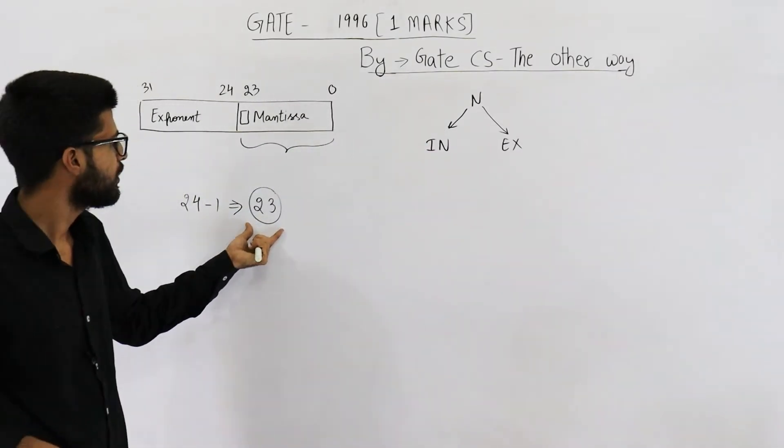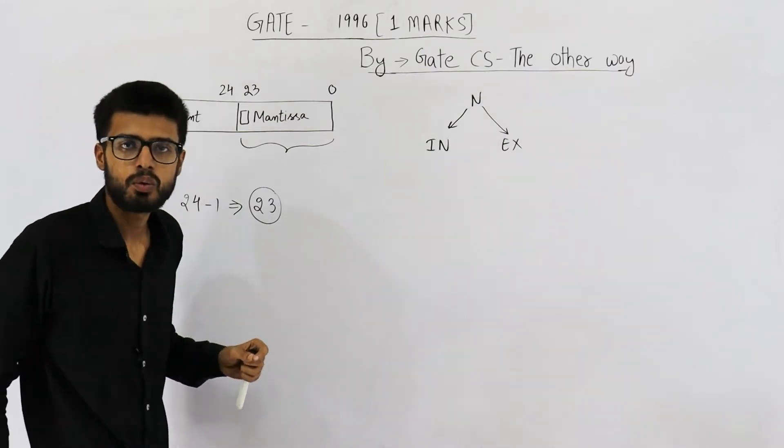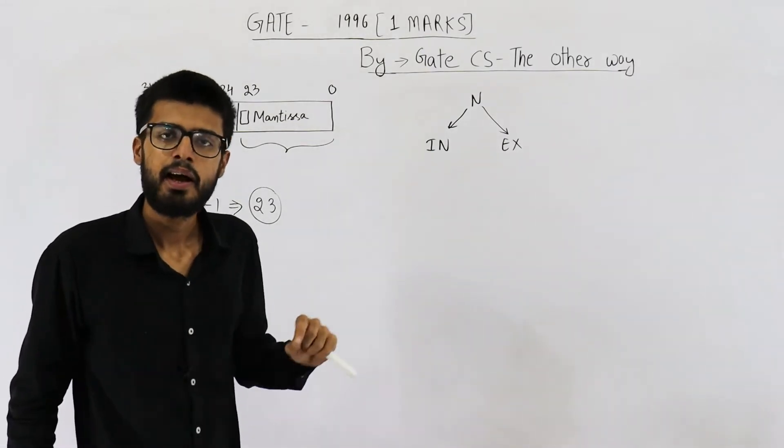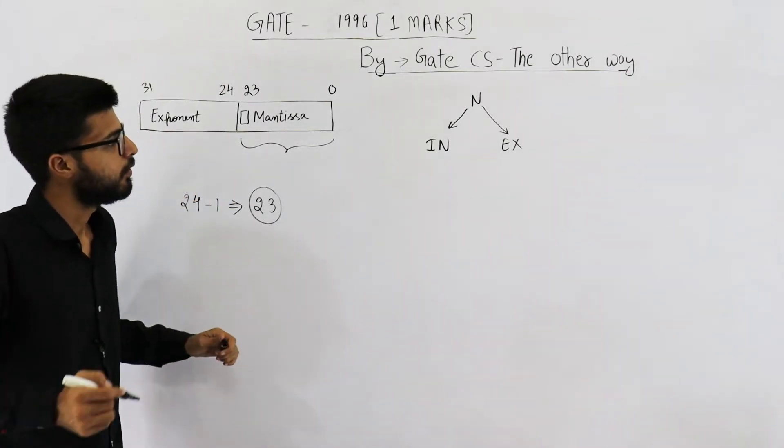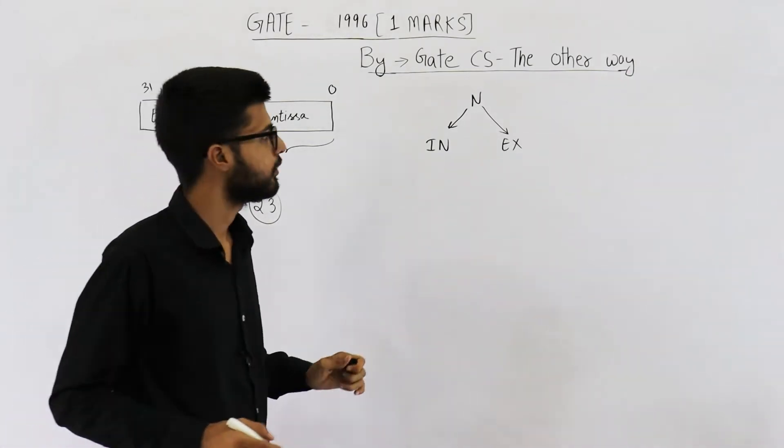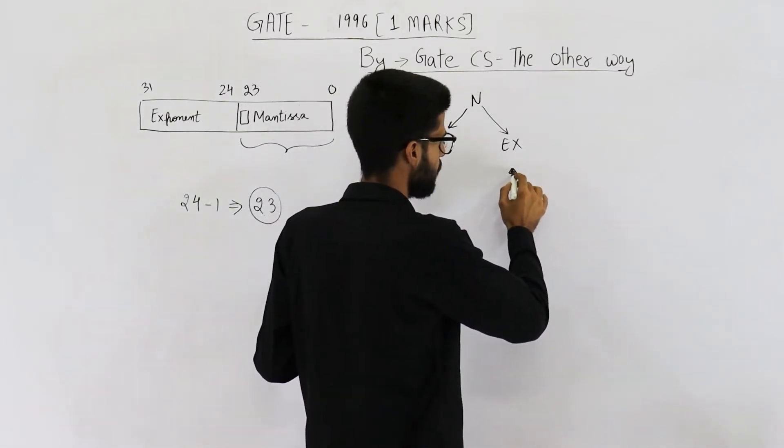Now, let us see what is the range that you get with 23 bits. For that, you need to know about normalization and what kind of normalization is used here. When they haven't mentioned anything, by default, we mostly assume explicit normalization.